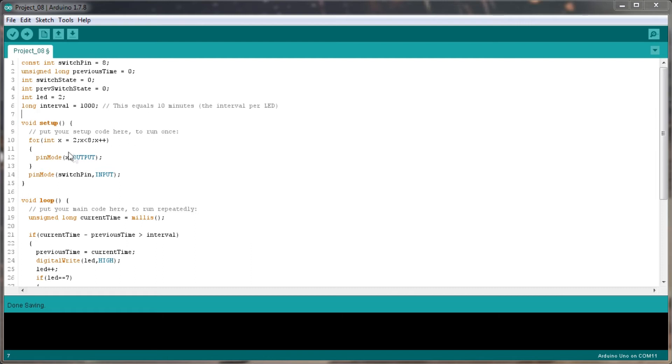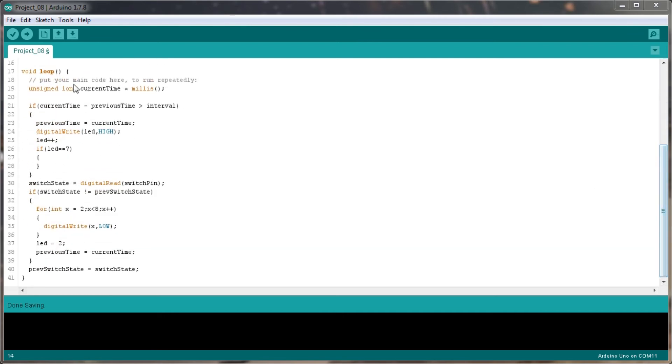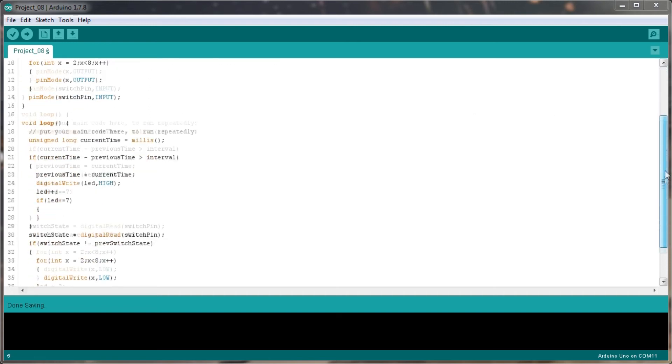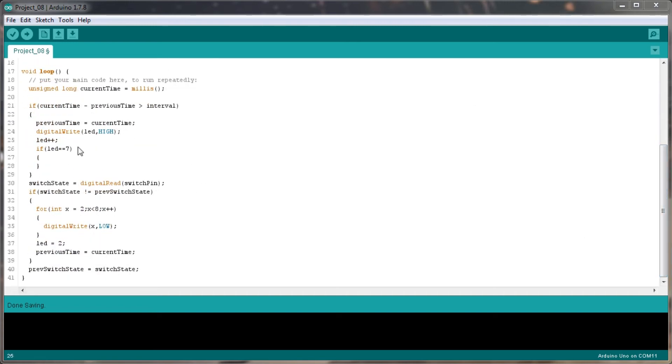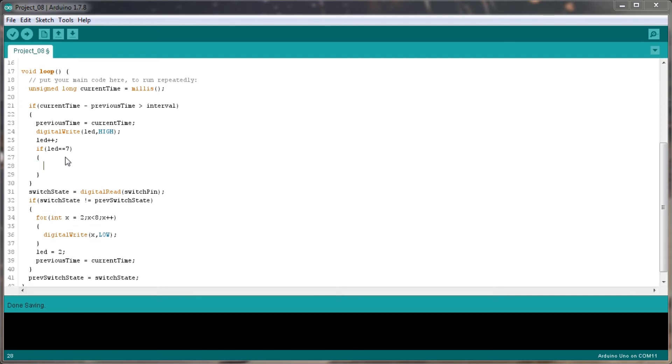So then we are setting up each one of the pins from 2 to 7, because x is less than 8, as the output. And we're setting the switch pin, which is 8, as the input. Then in our loop, we have our current time equal to whatever milliseconds we're on. If the current time minus the previous time is greater than the interval, then we will write our LED to high. Our LED which we're starting as 2, so our first one is actually going to switch on at that point. Then if LED equals 7, then there's an option to actually do some more work there, maybe activate a buzzer.